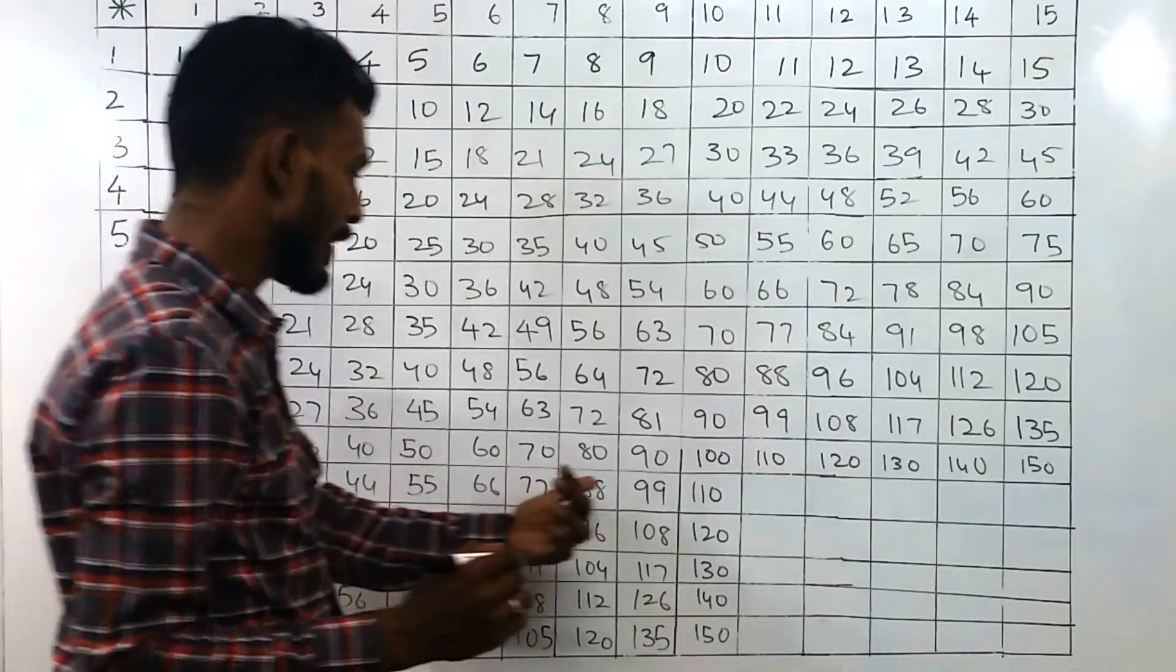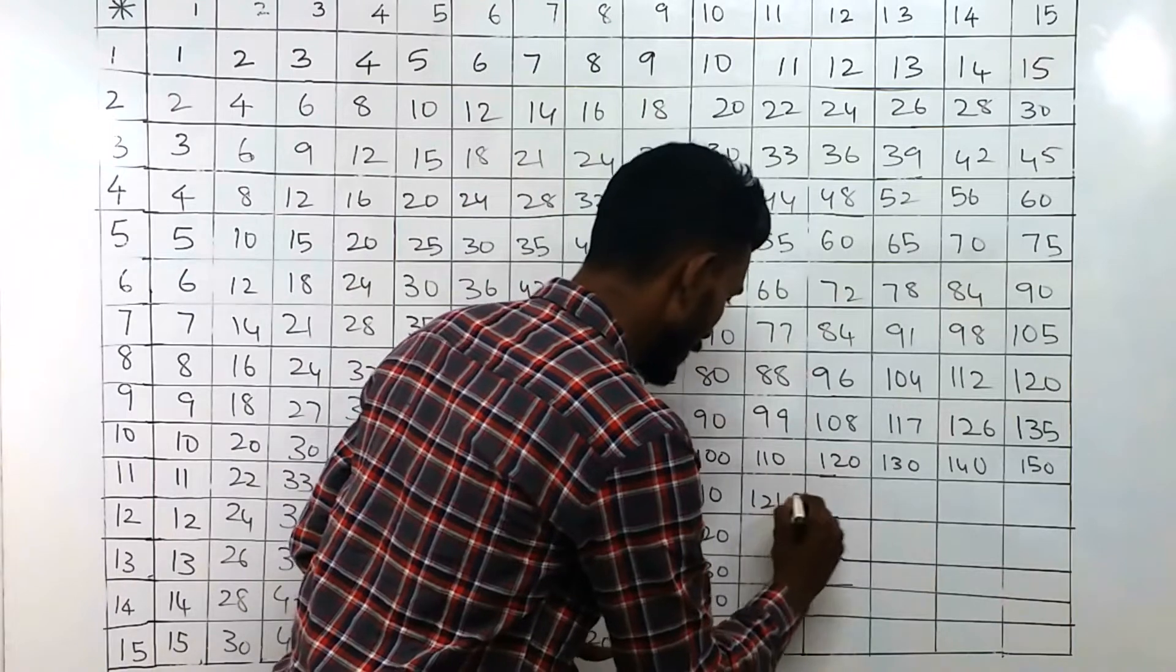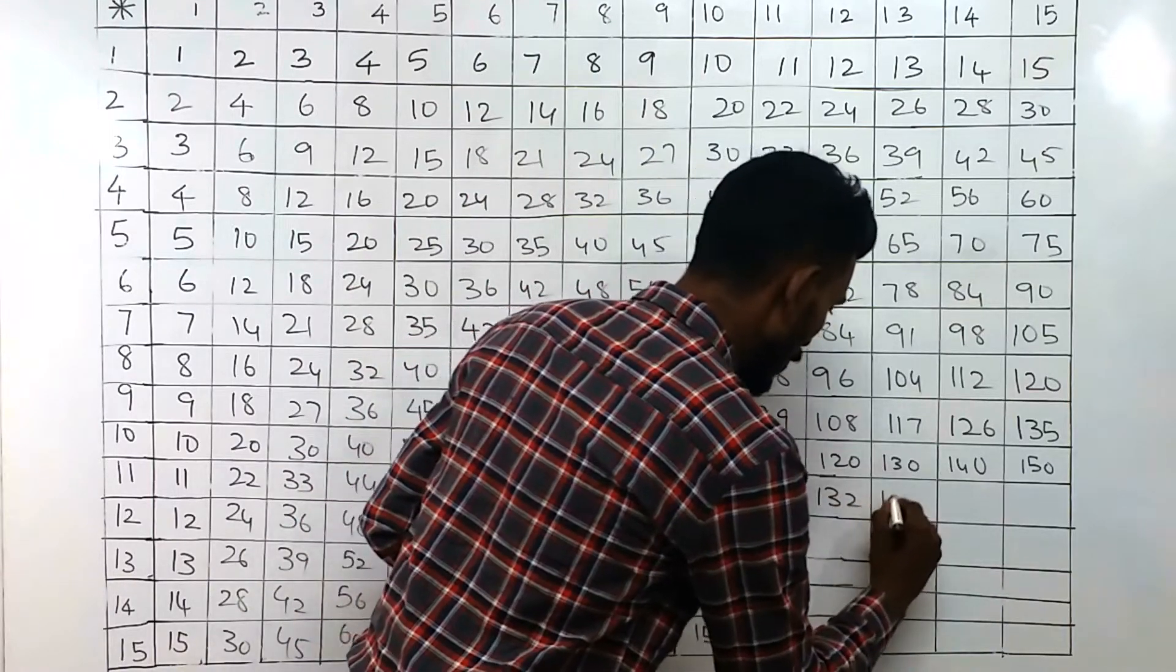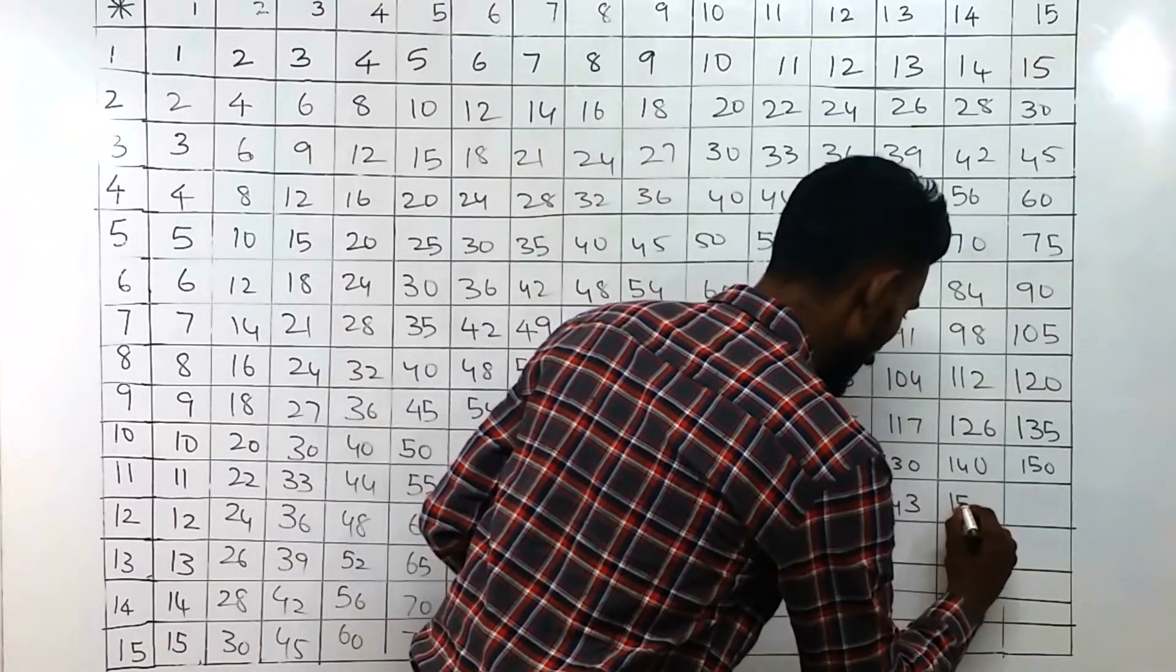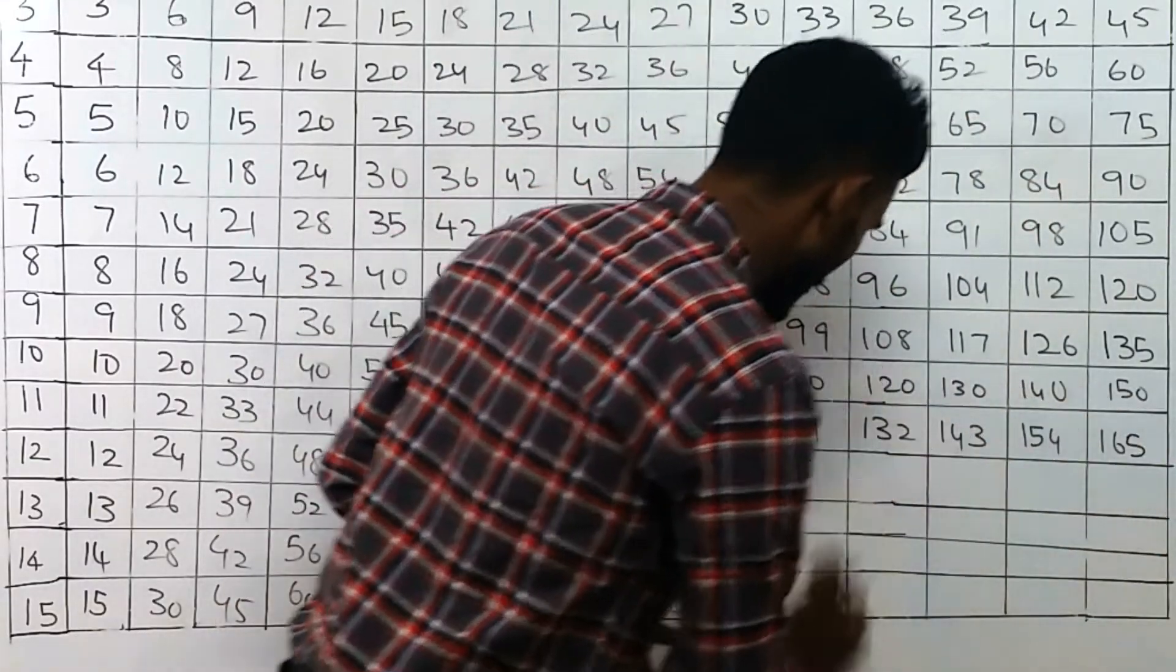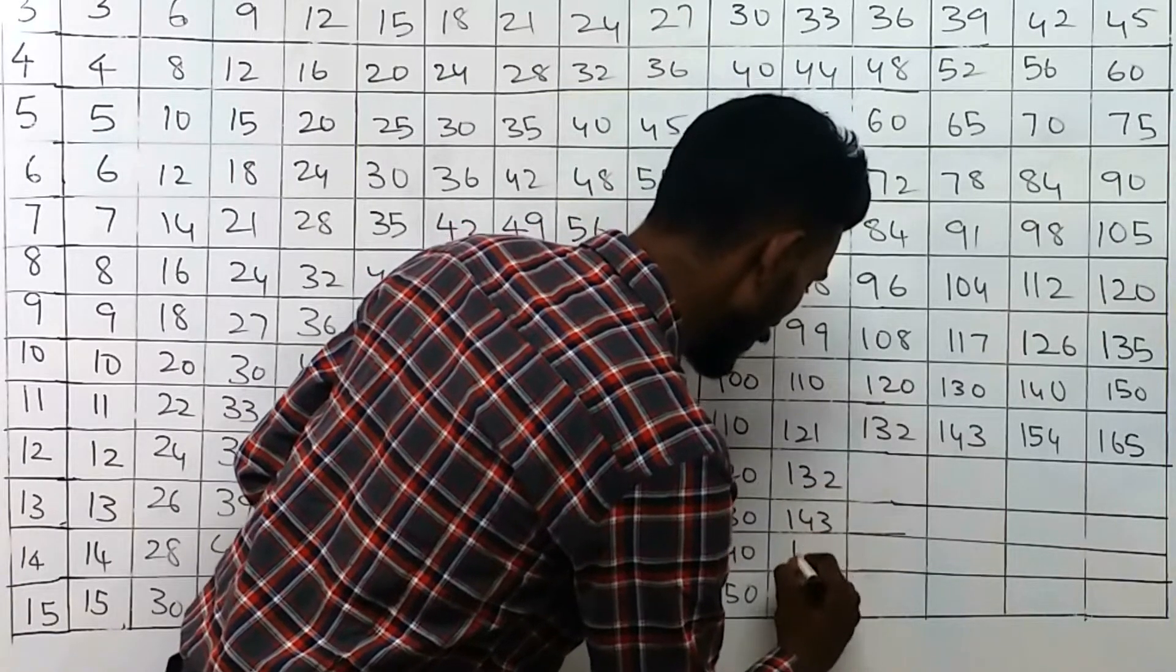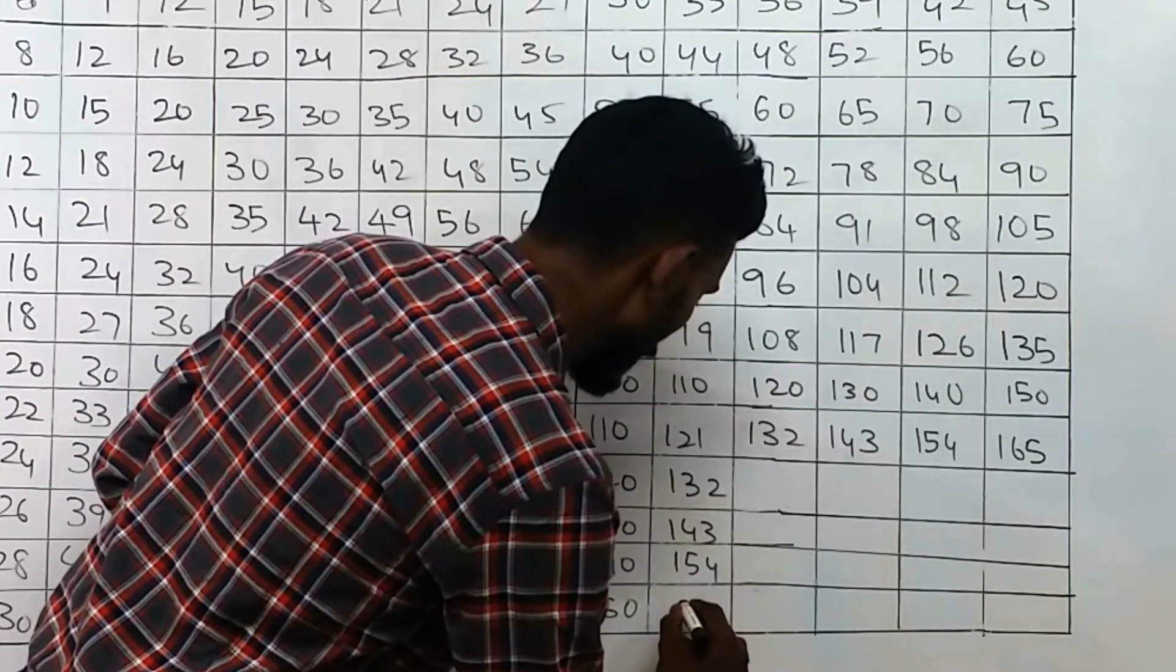Then in the 11th row, we have to add these things: 121, 132, 143, 154, 165. Write down these things here also: 132, 143, 154, 165.